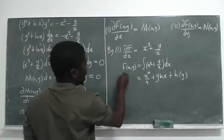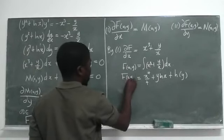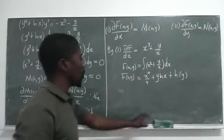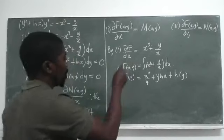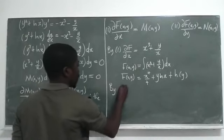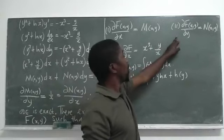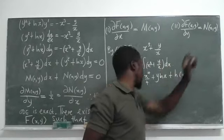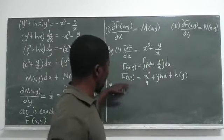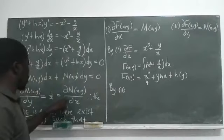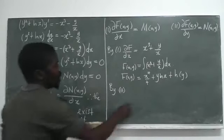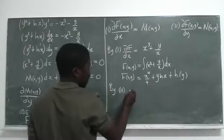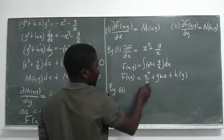We used condition one to find the general F. Now we apply condition two: the partial derivative of F with respect to y must equal N. We take the partial derivative of our expression for F with respect to y and equate it to N.